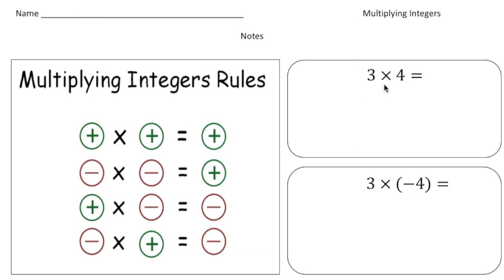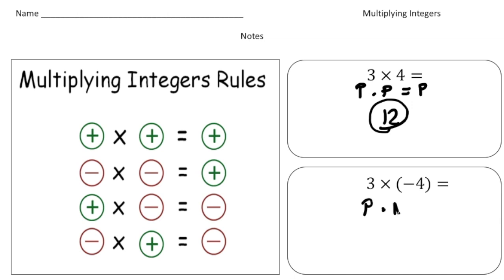So here we have three times four — it's a positive times a positive, so we know that gives us a positive. Three times four is 12. The next one, we have three times negative four. Here we have a positive times a negative. Remember, multiplication means groups of, so we have three groups of negative four: negative four plus negative four plus negative four, which results in negative 12.